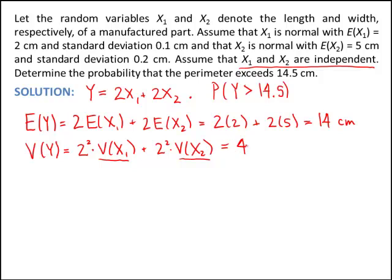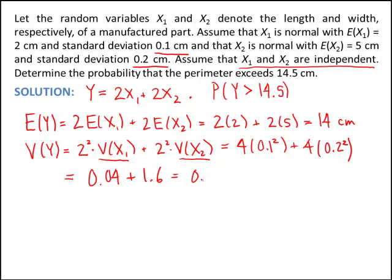This is going to be 4 times the variance of x1 — which is 0.1 squared, since 0.1 is the standard deviation of x1 — plus 4 times 0.2 squared, since the standard deviation of x2 is 0.2. The total variance is 0.04 plus 0.16, which equals 0.20 centimeters squared. Be careful: this is the variance, so when we compute the probability we'll use the standard deviation, which is the square root of 0.2 centimeters.